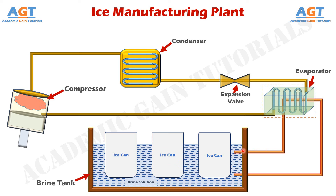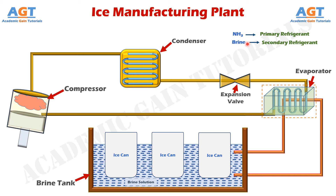Whenever we talk about any kind of refrigeration process, the first thing we need is a refrigerant or coolant. We can think of a refrigerant as the messenger or traveler, because the refrigerant is the actual carrier or medium of heat exchange throughout the whole refrigeration cycle. In this ice manufacturing plant, we will use two refrigerants. The first and primary refrigerant is ammonia, and the second refrigerant is the brine solution. The brine solution is cheaper and increases the heat carrying capacity, so we can use it along with ammonia as a refrigerant, which will help us extract heat from the surroundings of the ice cans.